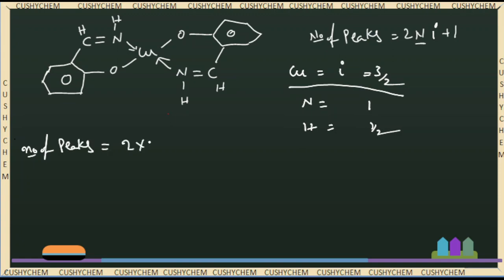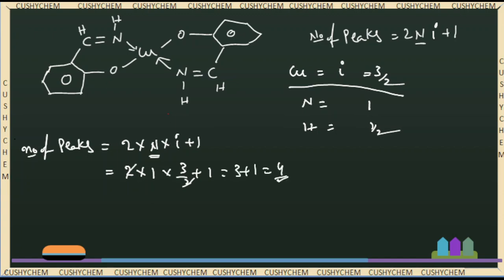We calculate using the formula 2nI + 1. So n is 1, and I value is 3/2, giving 2×1×(3/2) + 1 = 3 + 1, which is 4 peaks. This is the hyperfine structure in the absence of a magnetic field — 4 peaks generally.